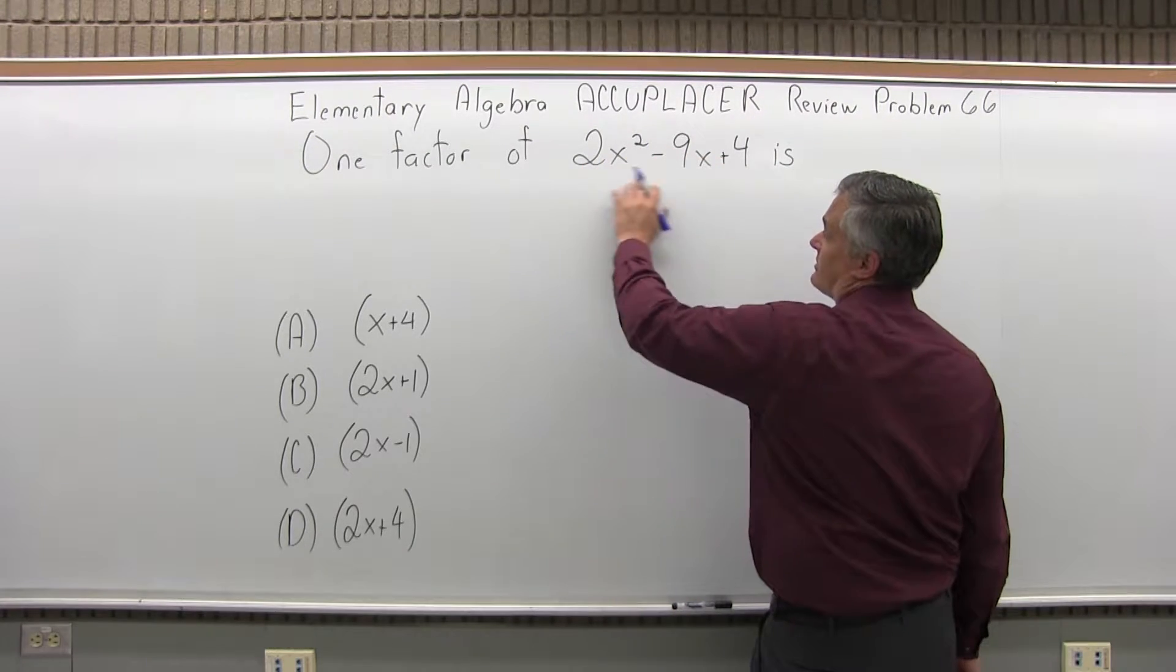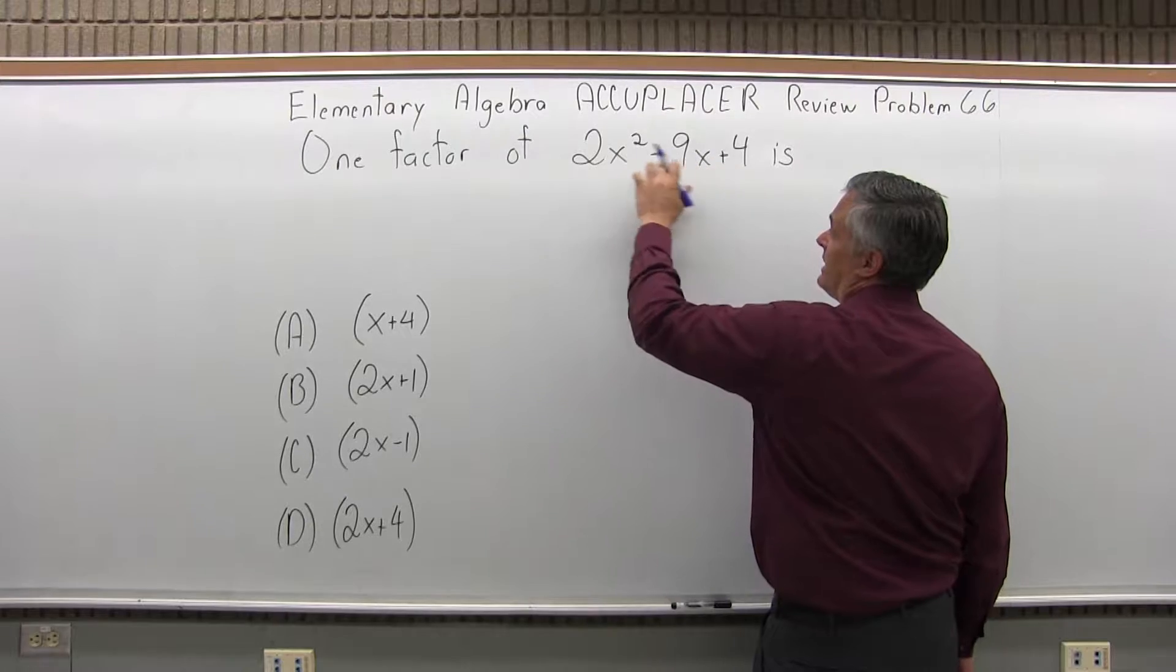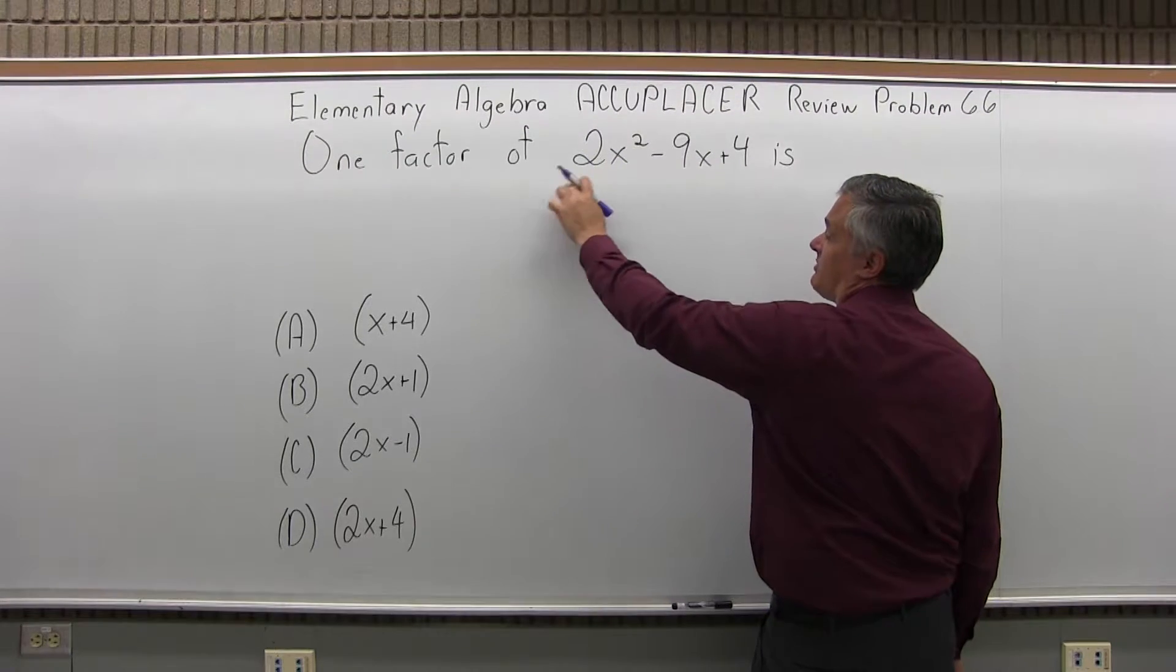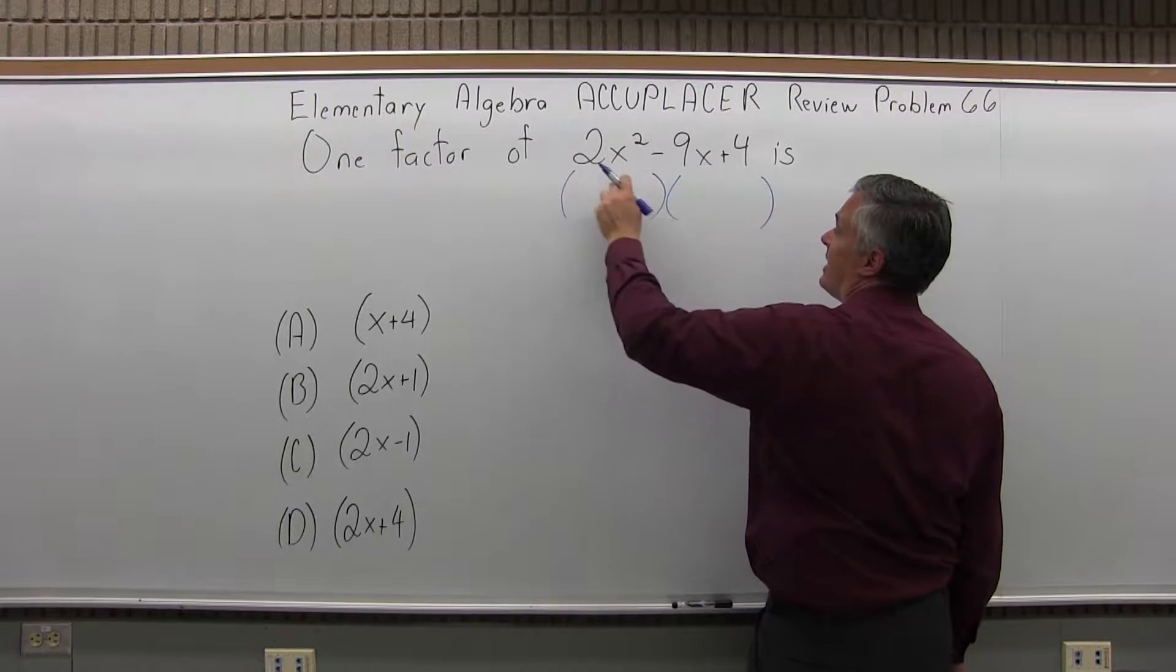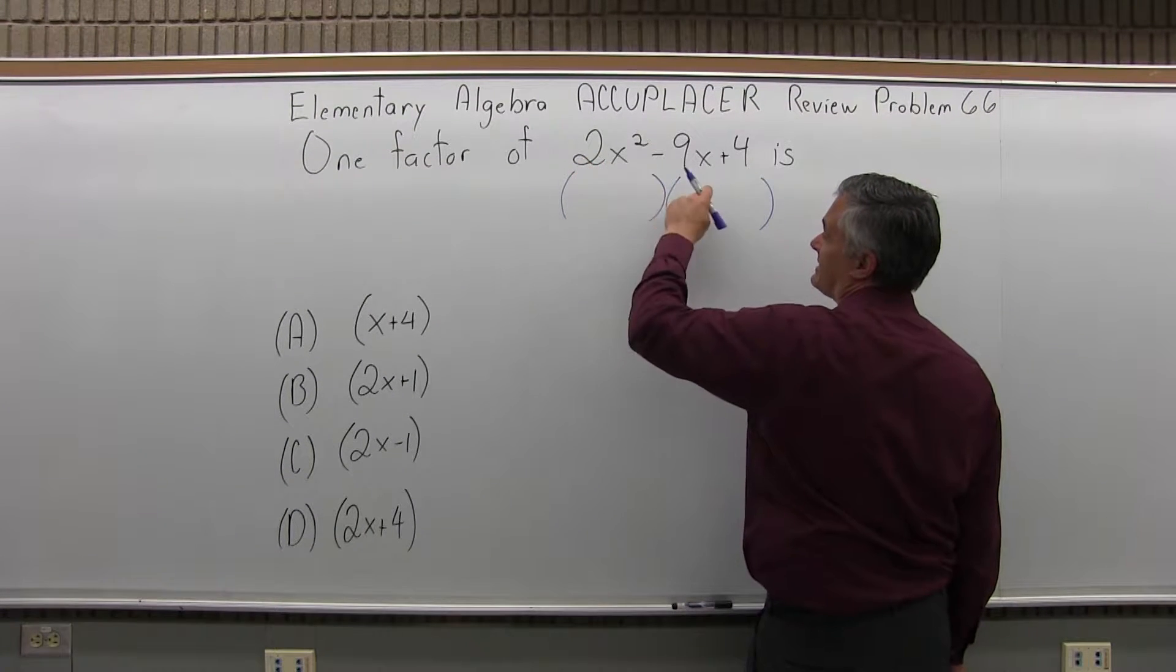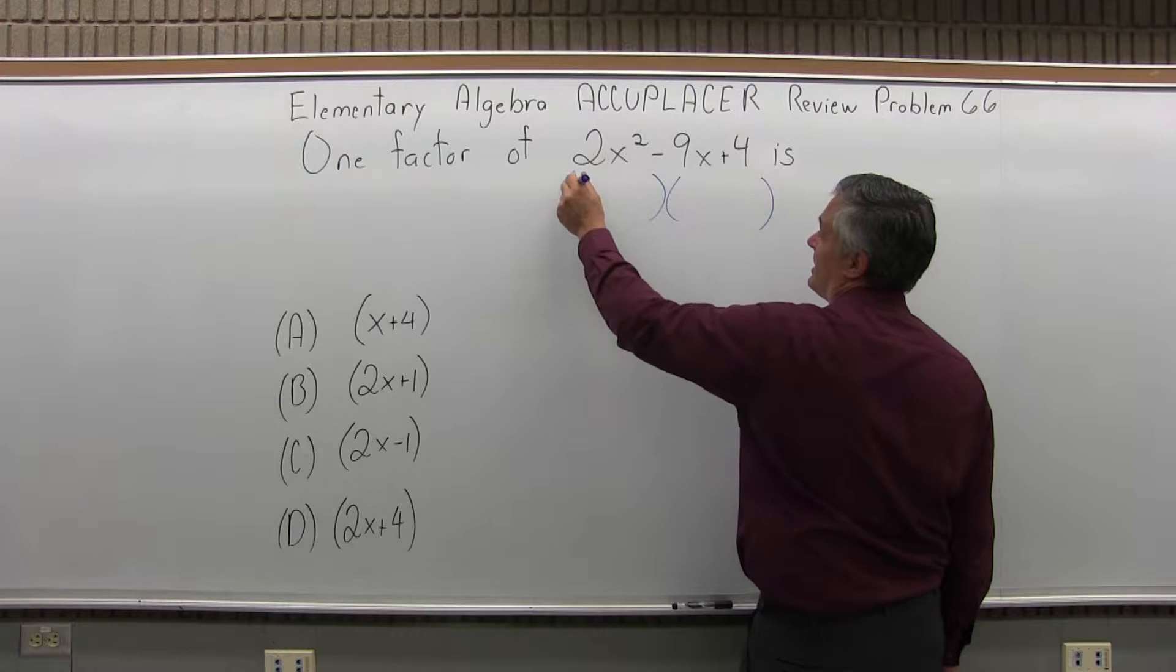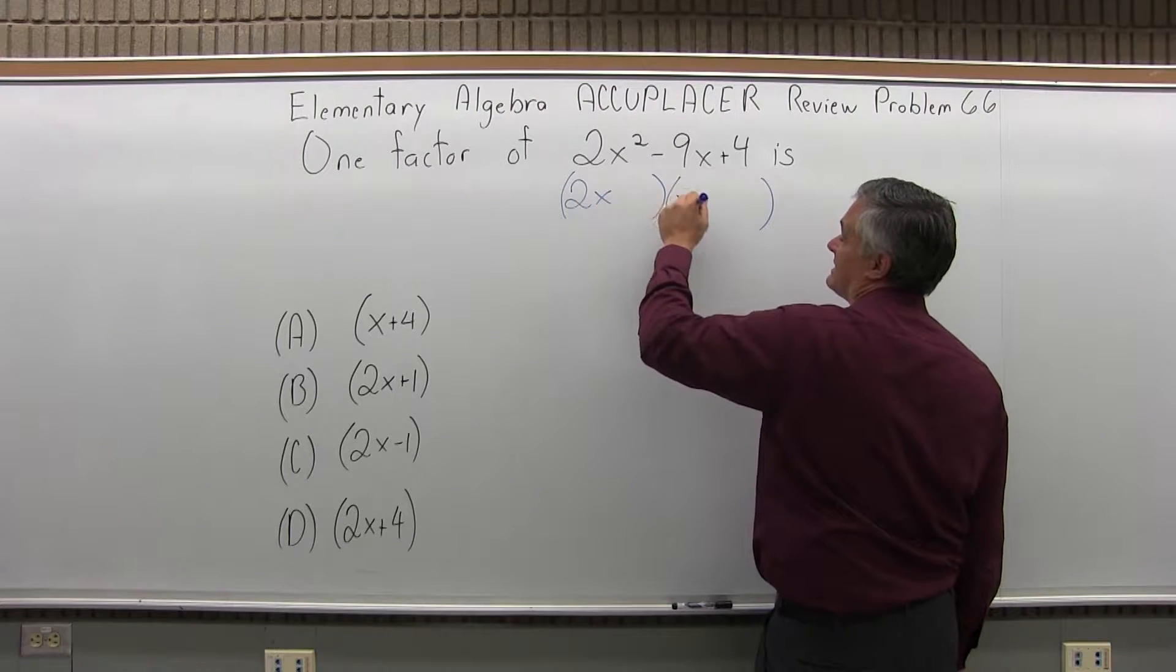First, when you factor something like this, you want to see if there's any value you can take out of all the pieces that are there, and there's not. So we'll start with the parentheses. Now because it's a 2x squared, I can't start xx, which I like a little bit better. I have to start 2x and x.